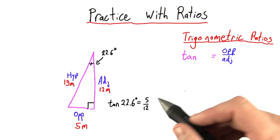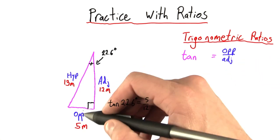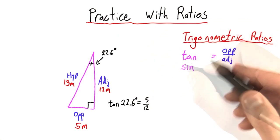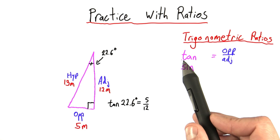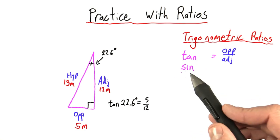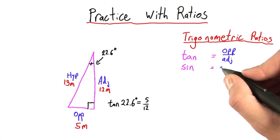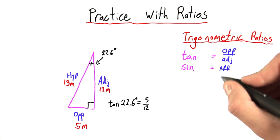But that's not the only ratio we can talk about. We can also compare the opposite to the hypotenuse. When we do that, we're using what's called a sine. So I should note that I'm making abbreviations here. Tan for tangent, sin for sine. Sine is just the opposite over the hypotenuse.